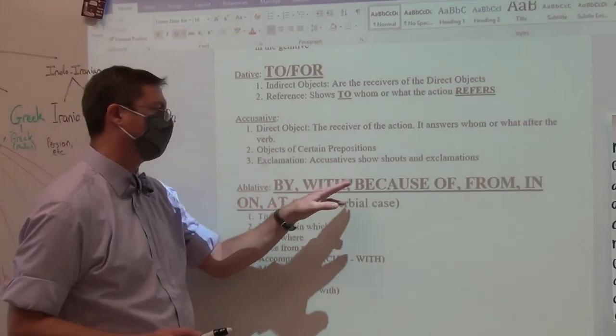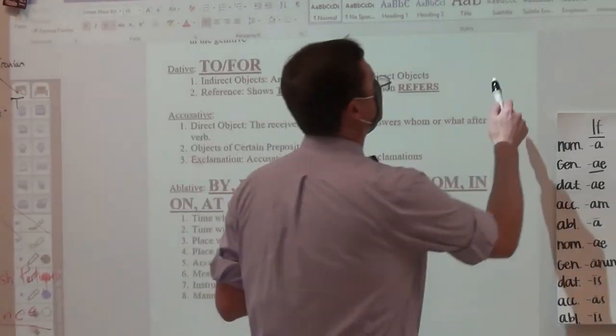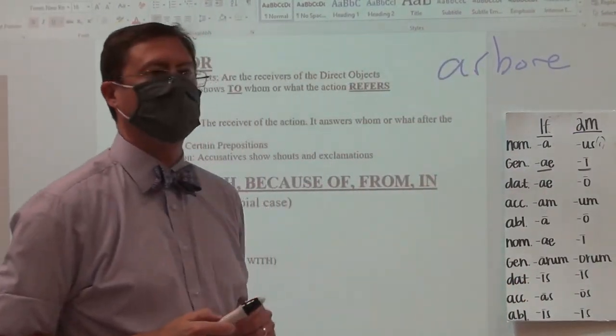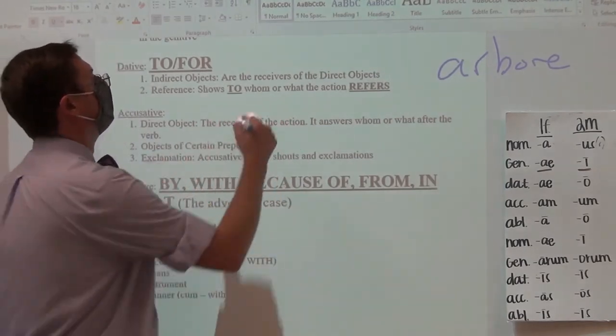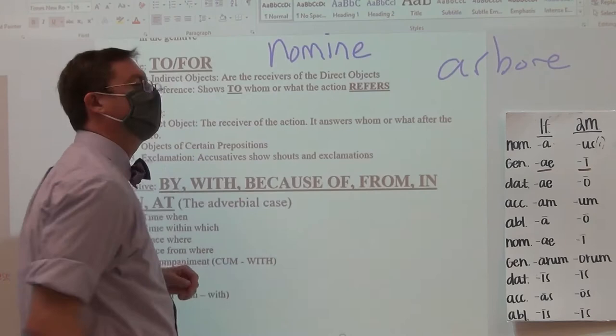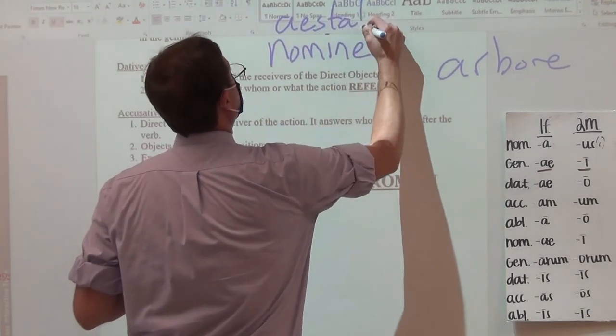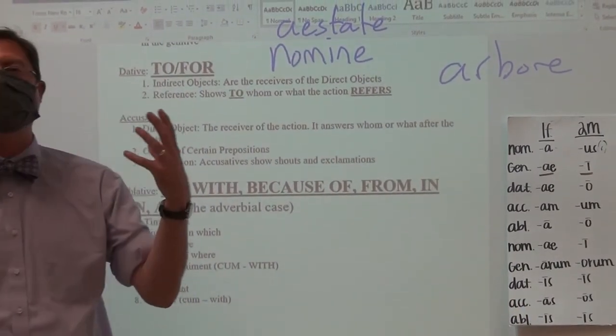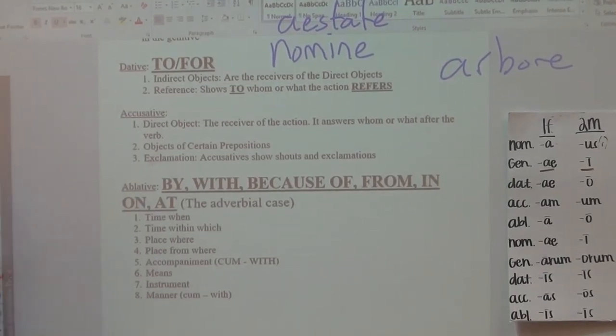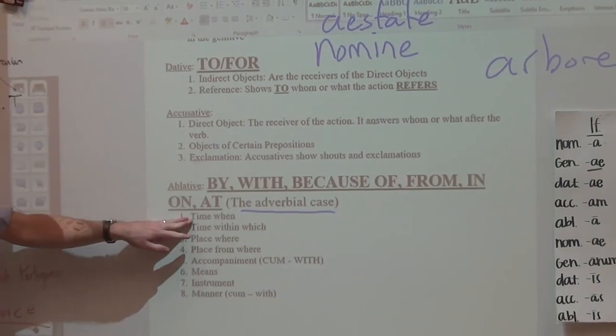The ablative and what is most important not that you know what all of these are but that whenever you see an ablative it's by, with, because of, from, in, on, at. So if you see a word that would be something along the lines of arbore you can't just say tree you must say by, with, because of, from, in, on, at, the tree or if I were to see in the very first chapter of Ecce Romani nomine it would be by name or this one as well aestate it wasn't just the summertime you had to say in the summertime because the ablative case is going to express something about the action.